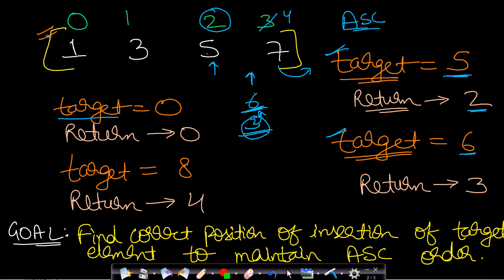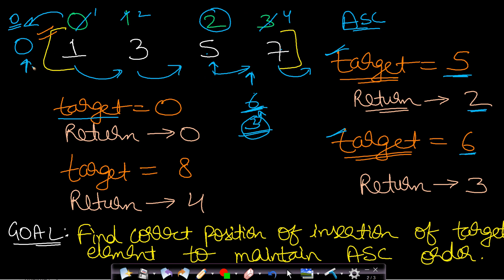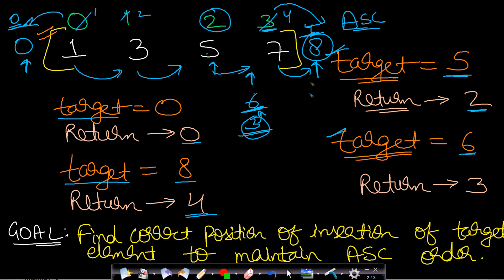Now let us say the target equals zero. Zero is out of bounds — there is no element zero, and zero falls to the left of one. In this case you just return the first index, which is zero. If an element falls out of bounds on the left side, return index zero. If an element falls out of bounds on the right side, return the last index plus one. For example, if the target is eight, eight is greater than seven, so it goes after seven, and its index will be the index of seven plus one, which is three plus one equals four. The return value will be four.